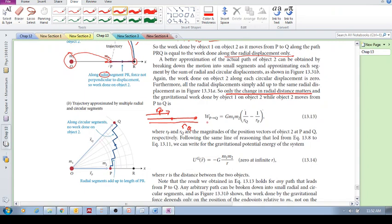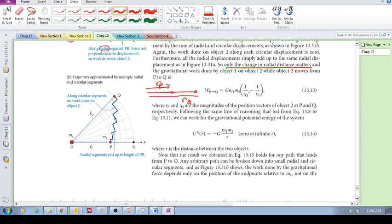But still, the work done is only the difference, is only based on the difference between the radial directions. I hope you're getting that. So this is the work done from P to Q. So the idea is that we only care about the end points. We only care about that point and that point. And we don't care about how you got there.